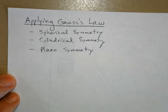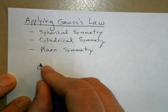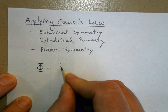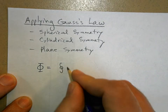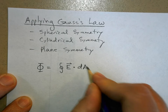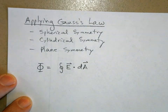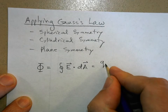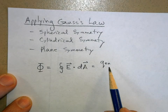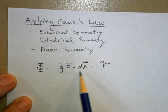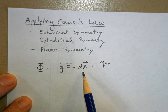Let's quickly review what Gauss's law says. Electric flux equals the closed surface integral of the electric field times the area enclosing some amount of charge — q enclosed. The 'en' means enclosed; it's the charge enclosed by the surface area, which we call the Gaussian surface.